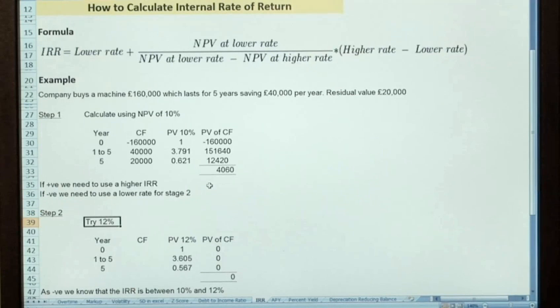So having used 10% when calculating NPV in step one, I'm now going to use 12% to try and hopefully get a negative outcome down here. So we're putting the same cash outflow in year one, same £40,000 per year and the same residual value of £20,000.